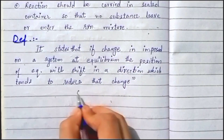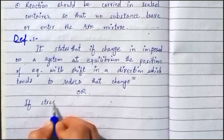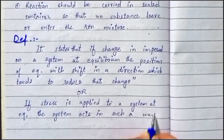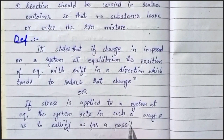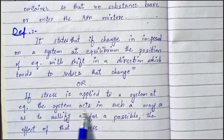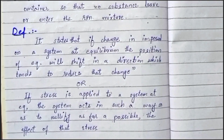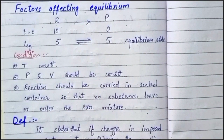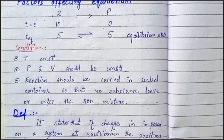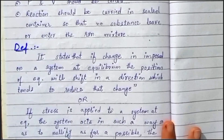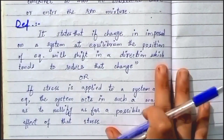Le Chatelier's Principle can also be defined as: if stress is applied to a system at equilibrium, the system acts to nullify, as far as possible, the effect of that stress. So if any type of stress is applied to a reaction at equilibrium, the system will nullify the stress by shifting its equilibrium position either in the forward or reverse direction.